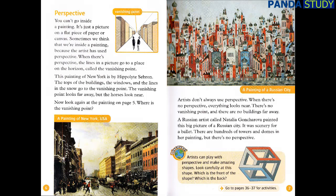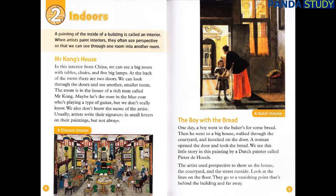Discover! Artists can play with perspective and make amazing shapes. Look carefully at this shape. Which is the front of the shape? Which is the back? A painting of the inside of a building is called an interior. When artists paint interiors, they often use perspective so that we can see through one room into another room.